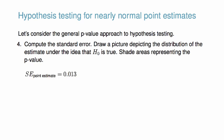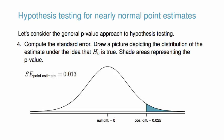The fourth step is to compute the standard error, draw a picture depicting the distribution of the estimate under the idea that the null hypothesis is true, and shade areas representing the p-value. The exact formula for the standard error will be dependent on the data and estimator, but the picture will generally be similar. Most importantly, the normal curve will always be centered at the value conjectured under the null hypothesis. In our current example, we are testing a one-sided hypothesis, so only one tail is shaded to represent the p-value.